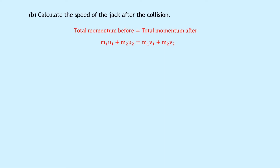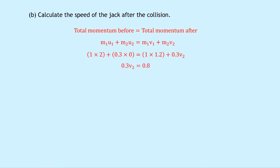We can't simplify this expression further like we did for inelastic collisions, so we substitute in the numbers: 1 times 2 plus 0.3 times 0 equals 1 times 1.2 plus 0.3 times V2. The term times by zero simplifies away. Rearranging so V2 is on the left hand side gives 0.3 V2 equals 0.8. Dividing both sides by 0.3 gives an answer of 2.7 meters per second.